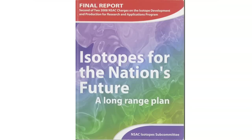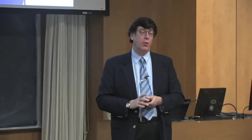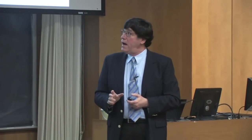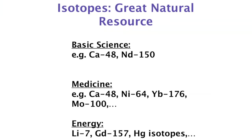This looming crisis led to a study by the Nuclear Science Advisory Committee to the Department of Energy. The 2008 report 'Isotopes for the Nation's Future' — publicly available — alerts to the fact that we are relying on stockpiles of isotopes produced in US calutrons, and all other isotopes are now imported from Russia. I would claim that isotopes really are a great, largely untapped natural resource that can be divided into basic science, medicine, and energy.